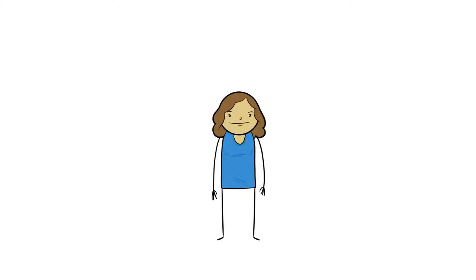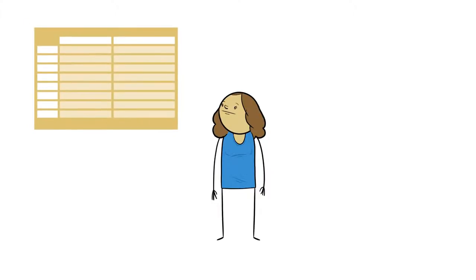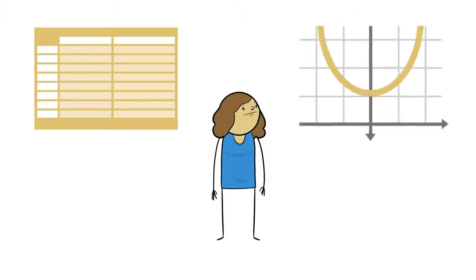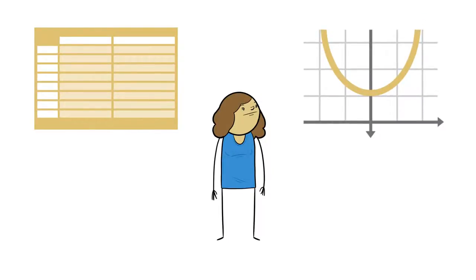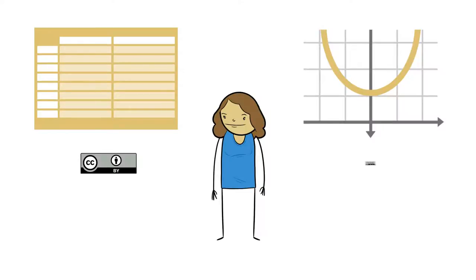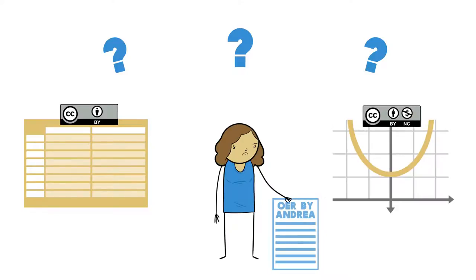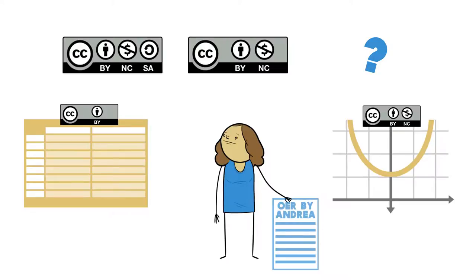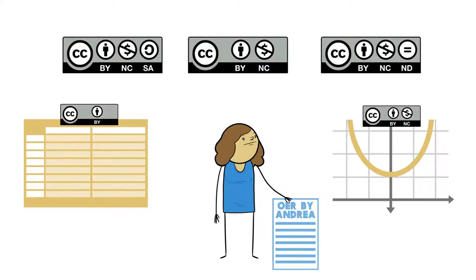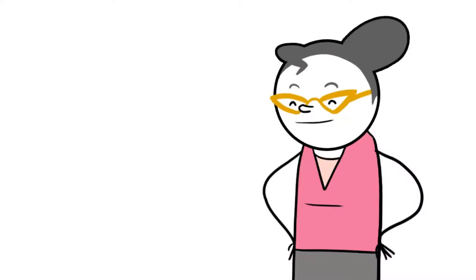Andrea has found two resources she wants to use with her own writing. One is an extensive table with useful information for students, and the other is a diagram that shows the relationships among complex variables. The table is found in a work with an attribution license, and the diagram carries an attribution non-commercial license. She wonders what licenses she can apply to her finished work. Considering the stipulations of the BY-NC license, she figures she can use a BY-NC, a BY-NCSA, or a BY-NCND license — and Beth agrees.